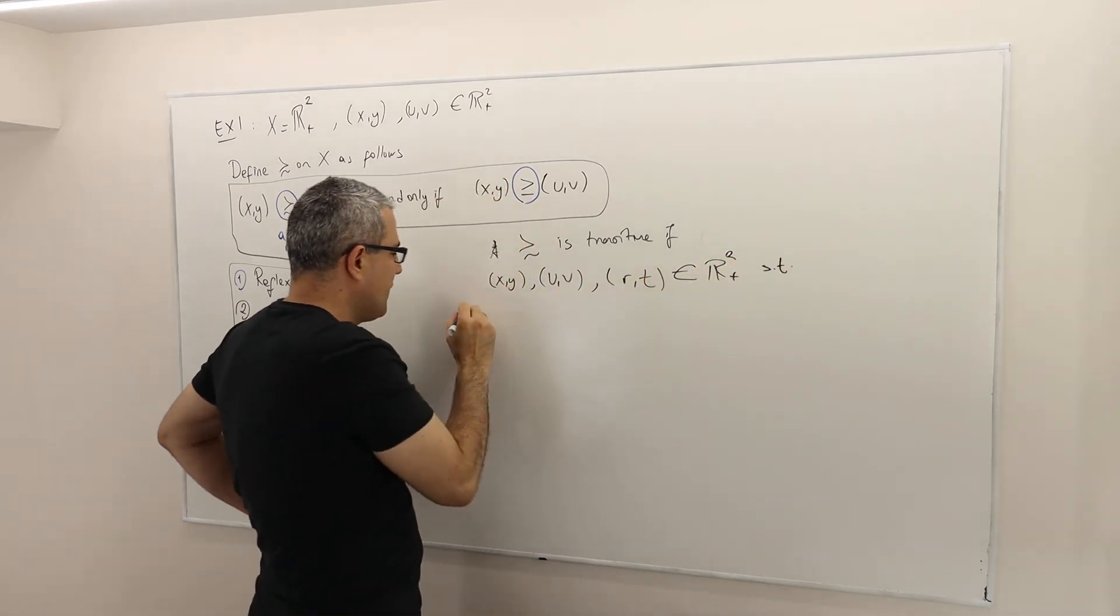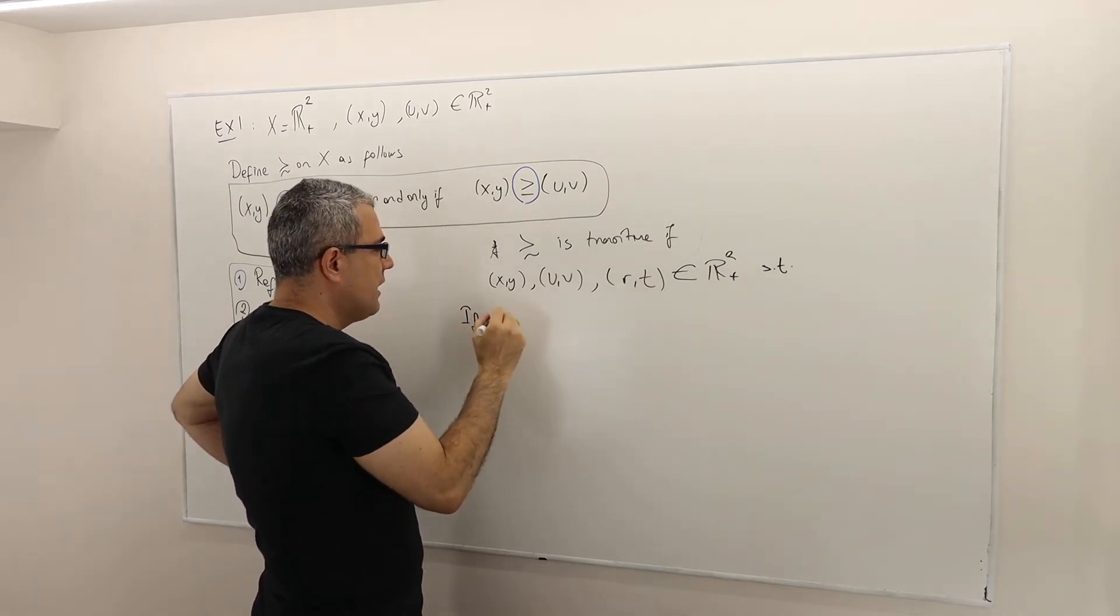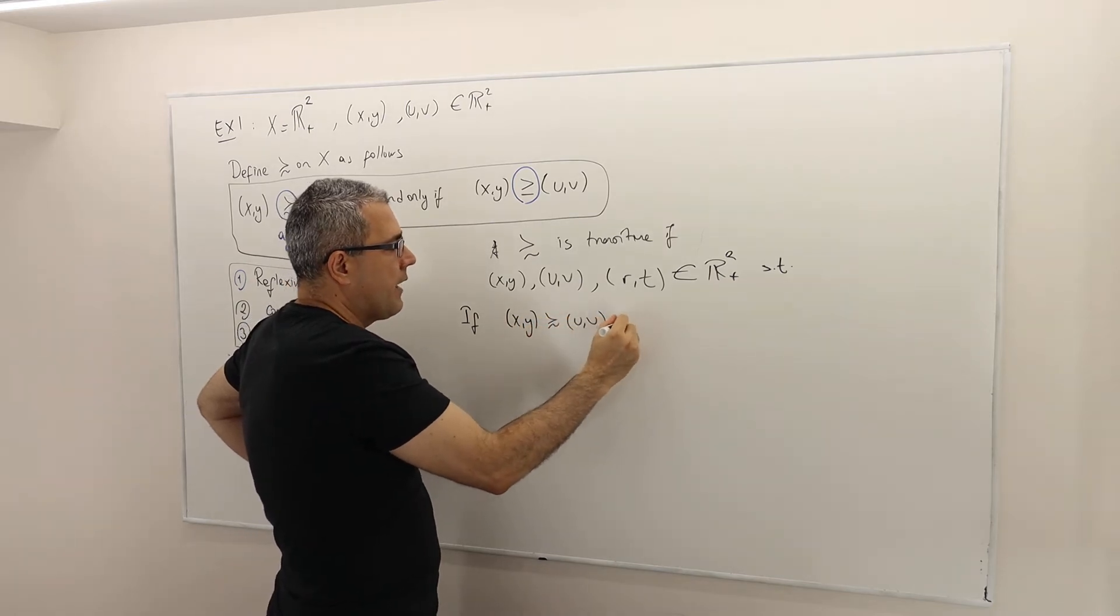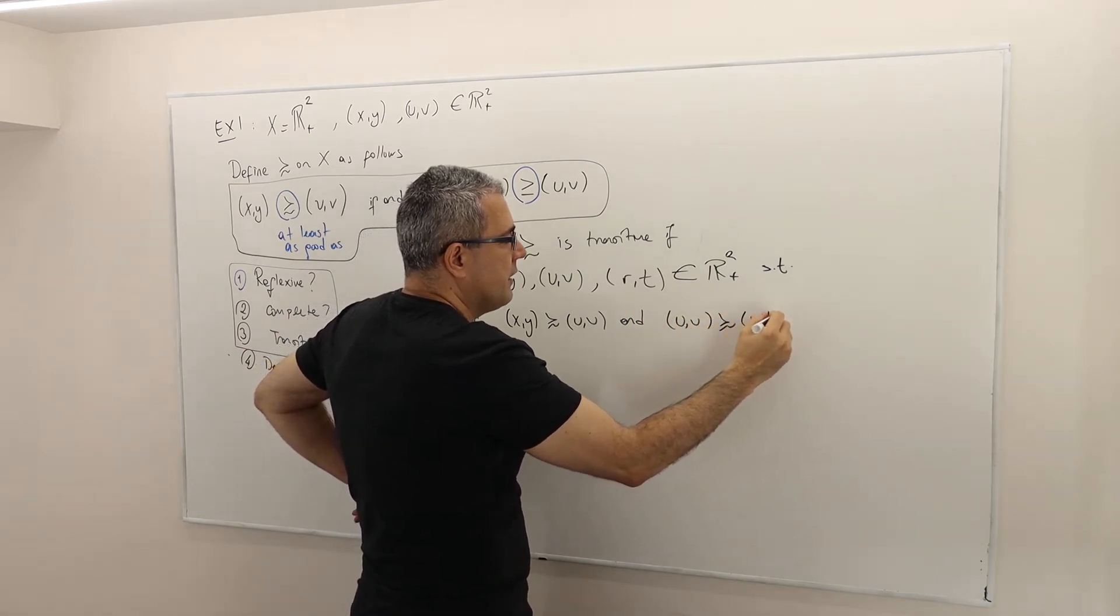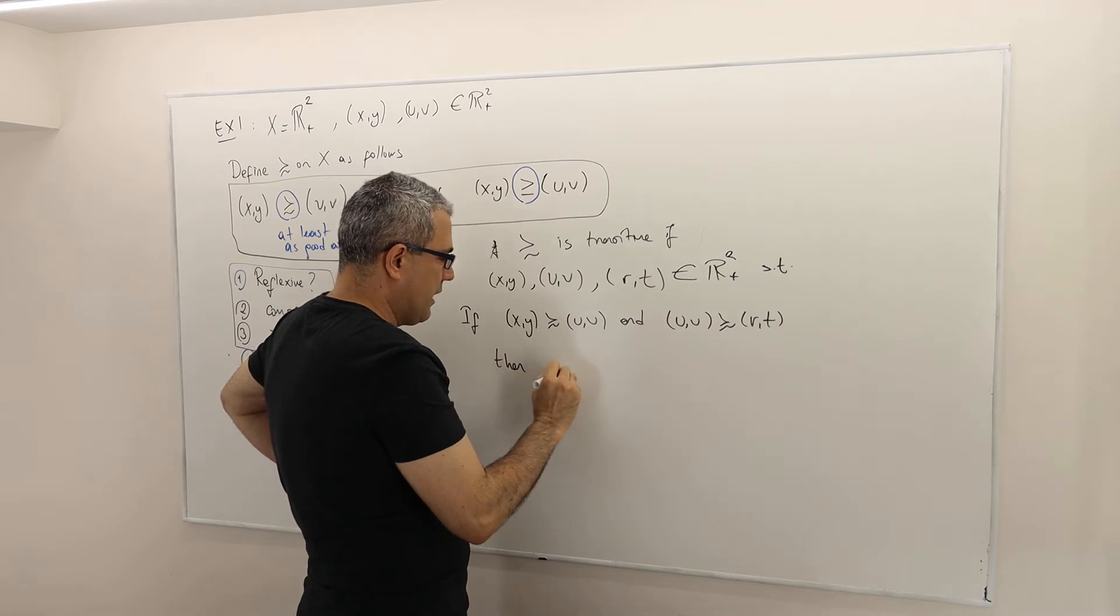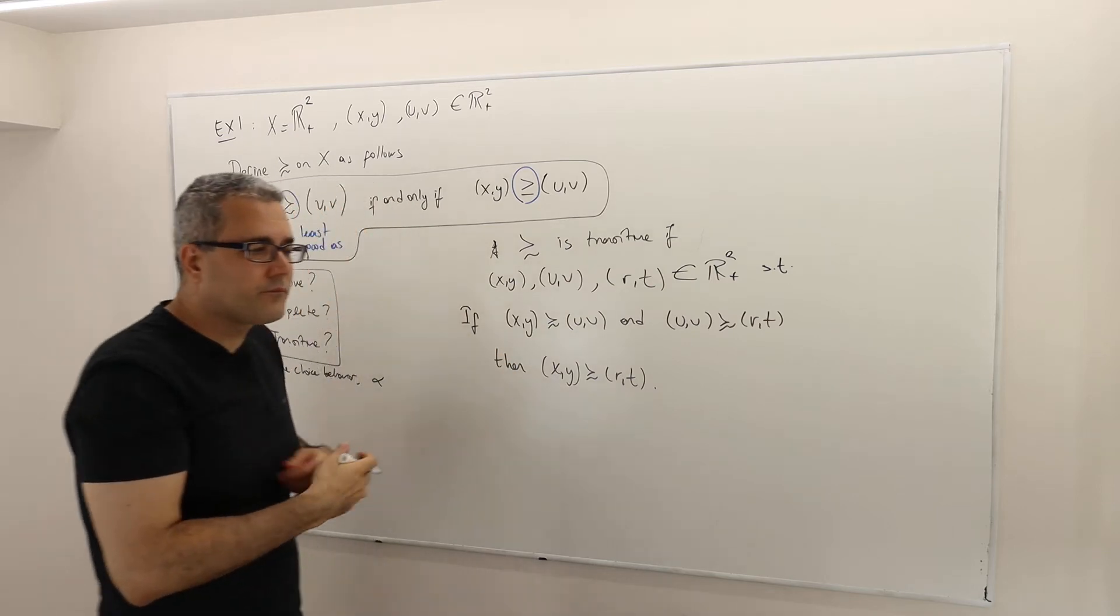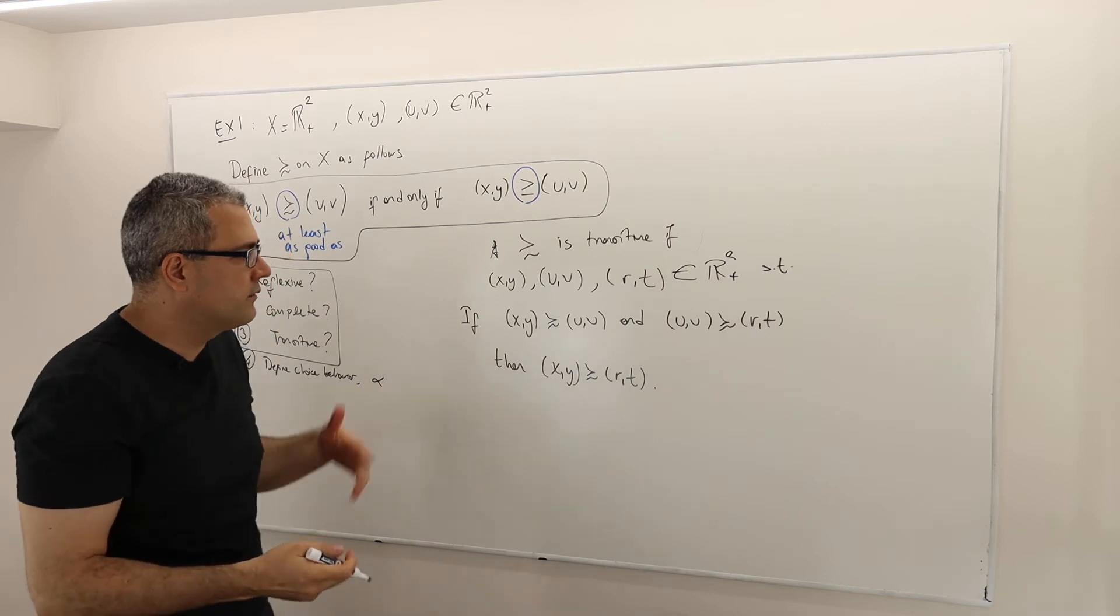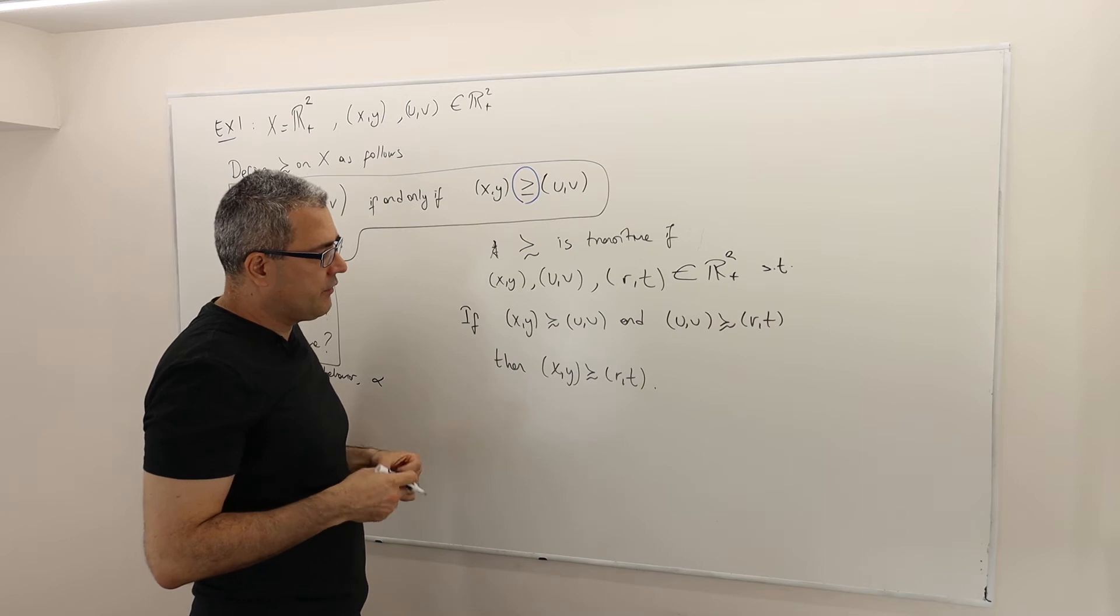So there's a huge if-then statement: if X, Y is at least as good as U, V, and U, V is at least as good as R, T, then X, Y is at least as good as R, T. Okay? So basically, if P and Q, then R, sort of statement. So this is the definition.